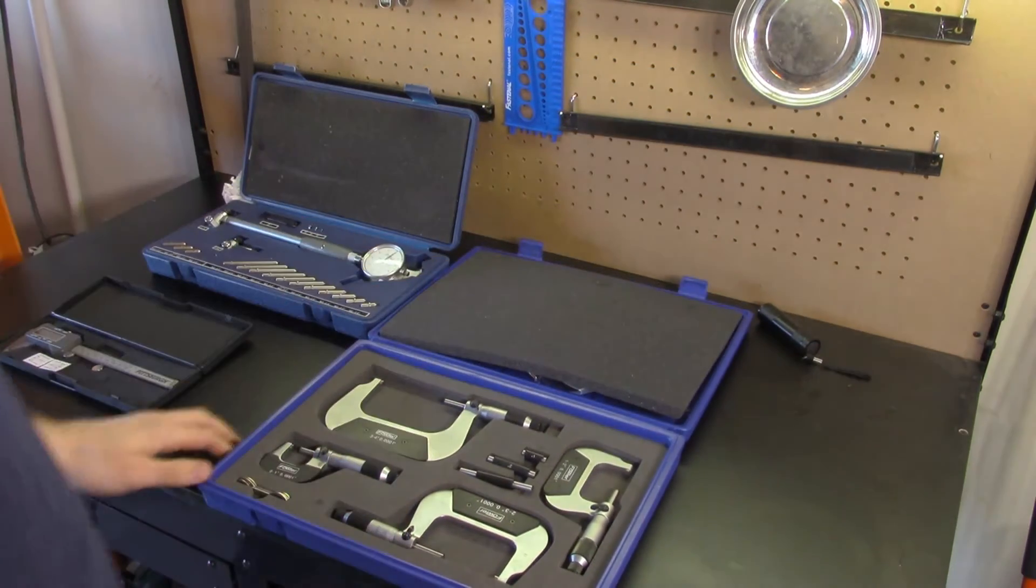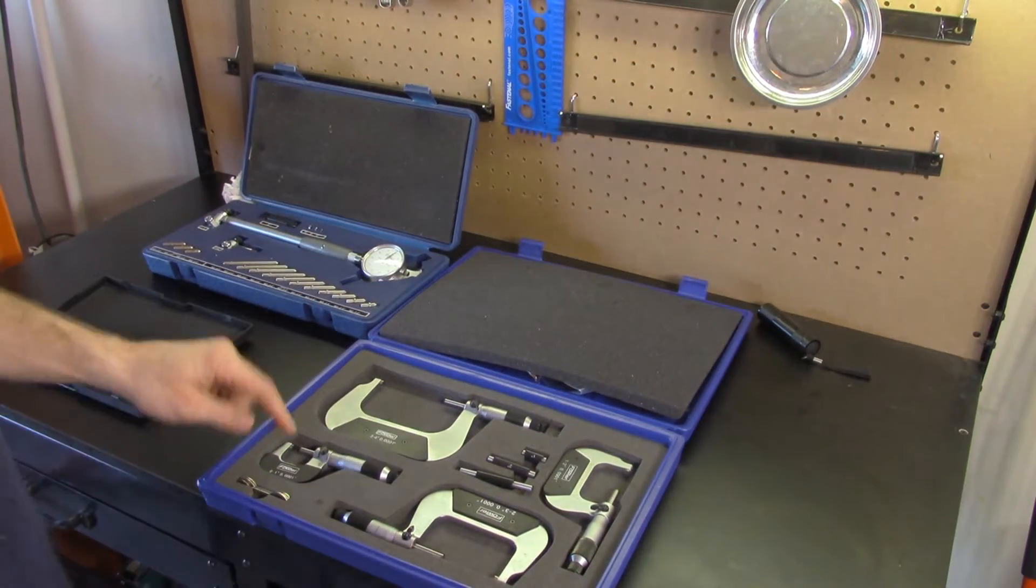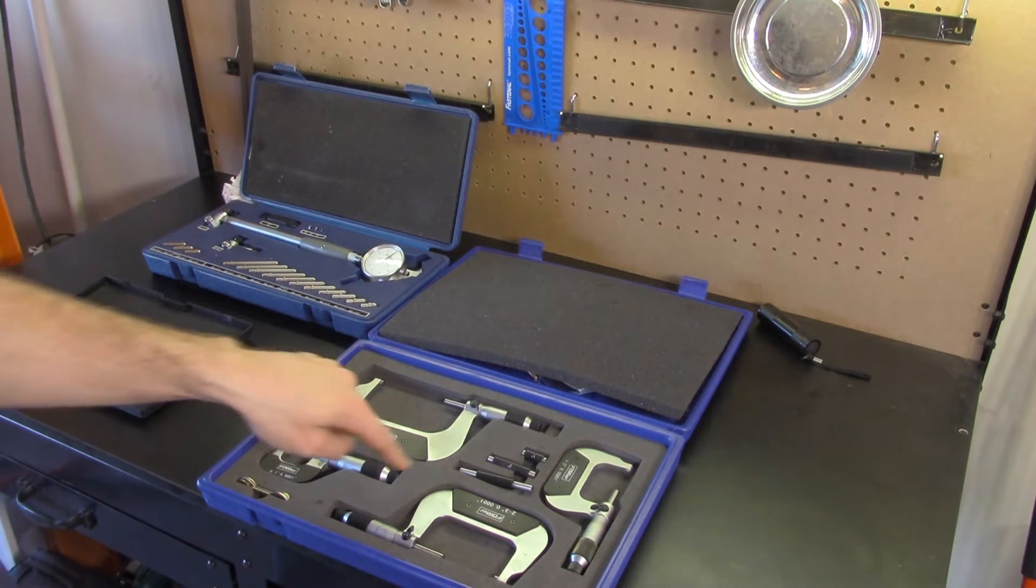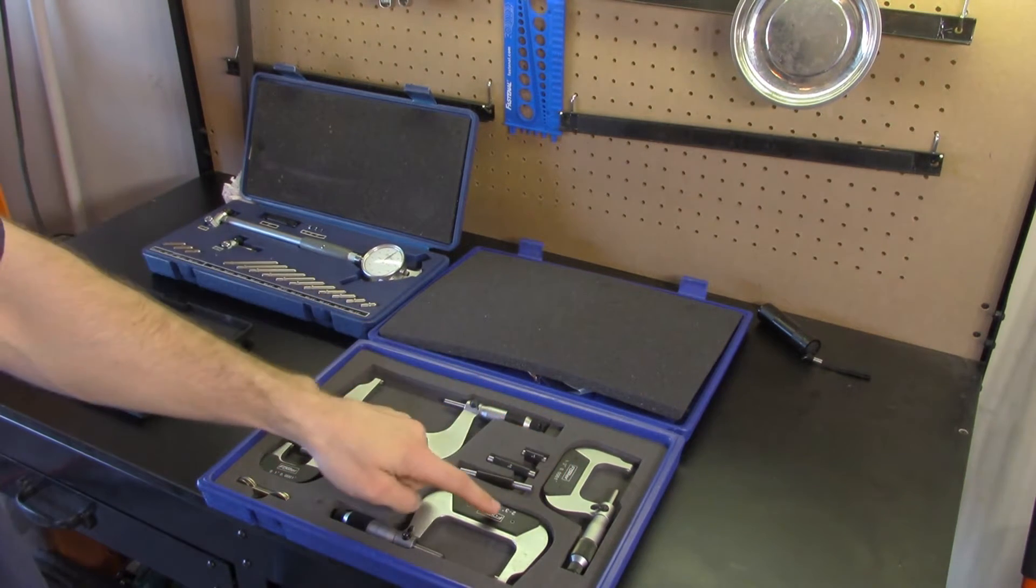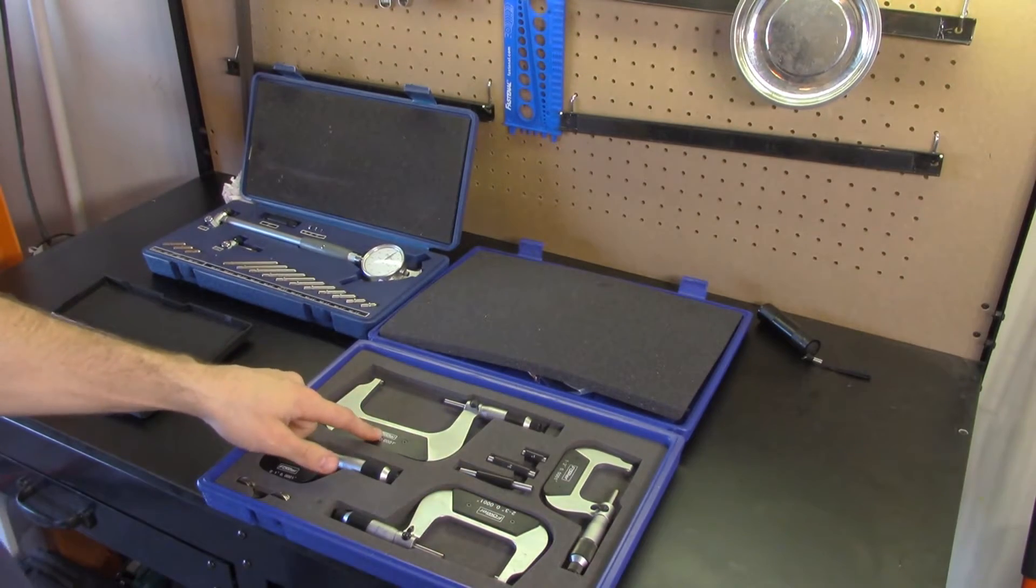Next up is the almighty micrometer. These are graduated in ten thousandths and this kit includes a zero to one inch mic, a one to two inch mic, a two to three inch mic, and a three to four inch micrometer.